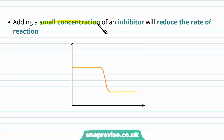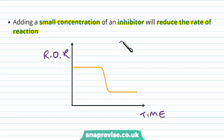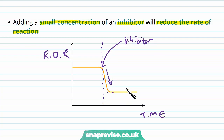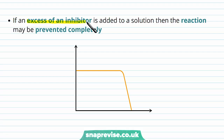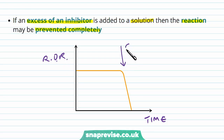If you add even just a small concentration of an inhibitor to an enzyme solution, it reduces the rate of reaction quite significantly. On a graph of time against rate of reaction, adding an inhibitor causes the rate to quickly drop down to a lower level. If you add the inhibitor in excess — lots and lots of inhibitor molecules — then the reaction drops right down to zero and basically stops. So it can be a very powerful molecule, and there are different types of inhibitors.